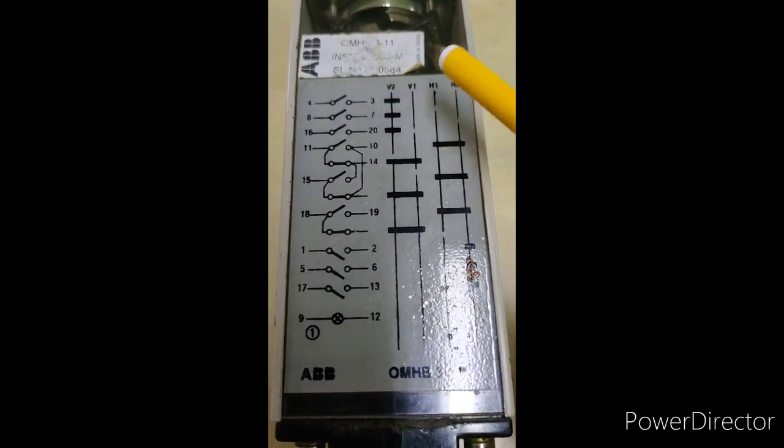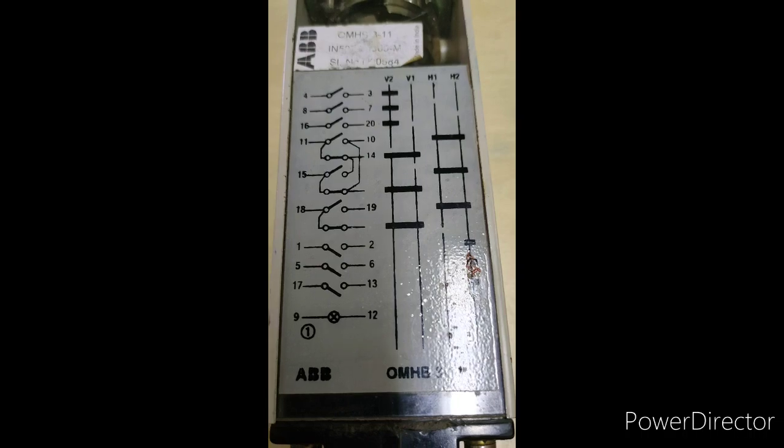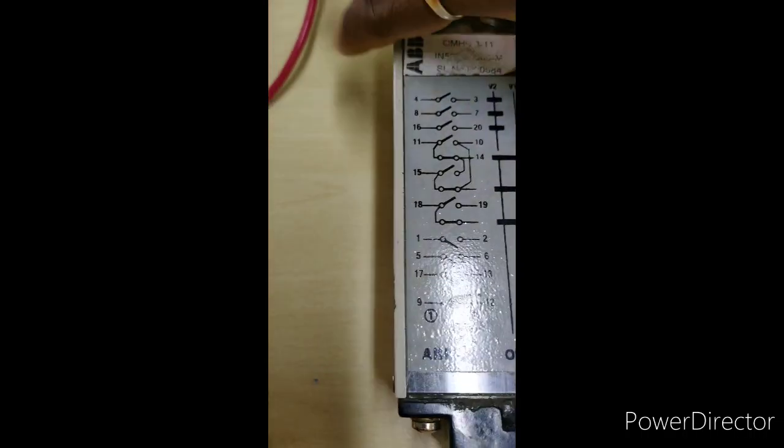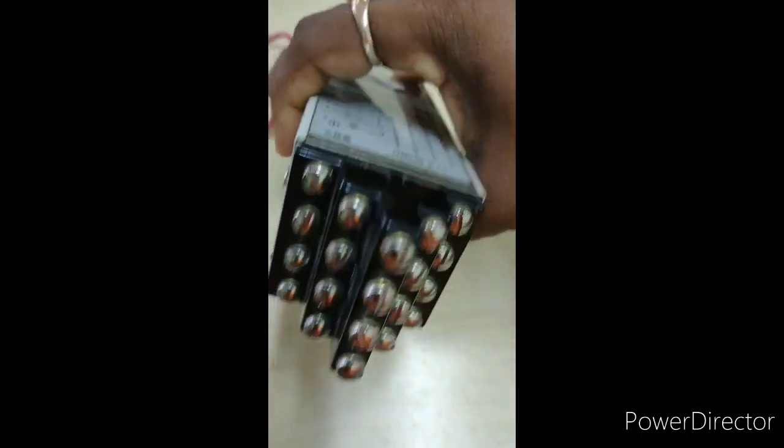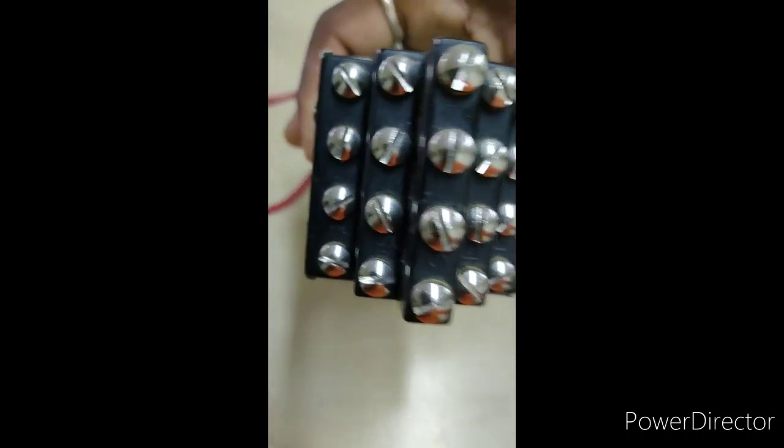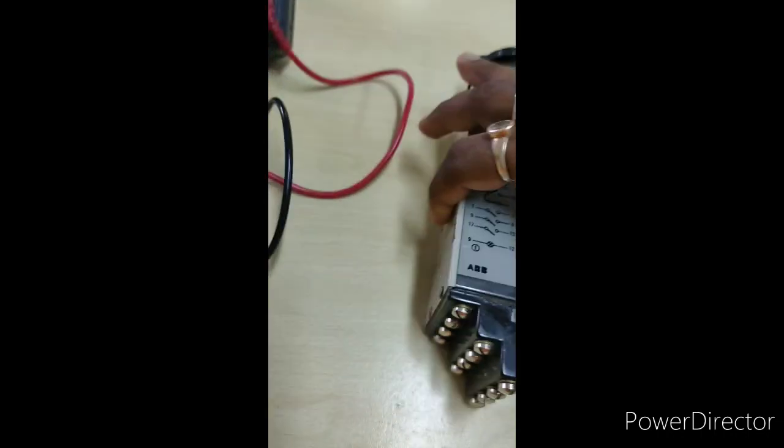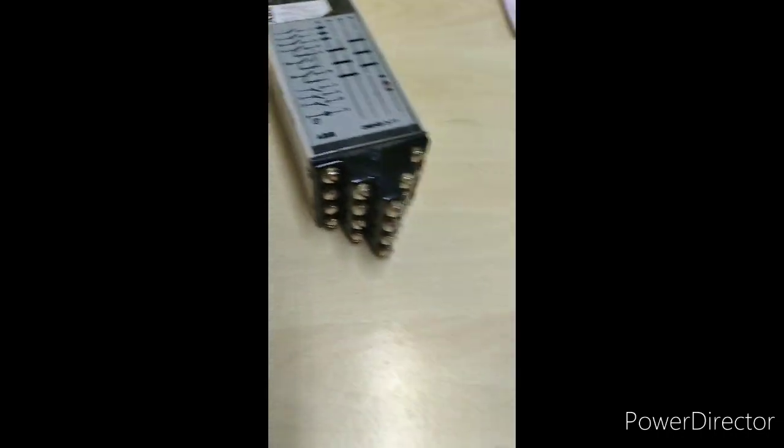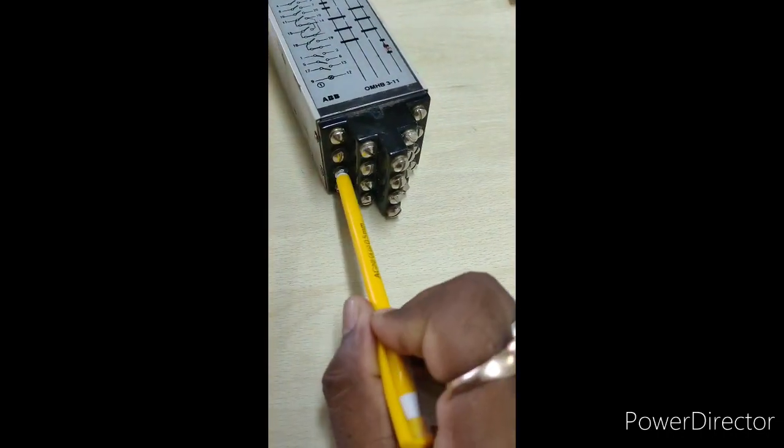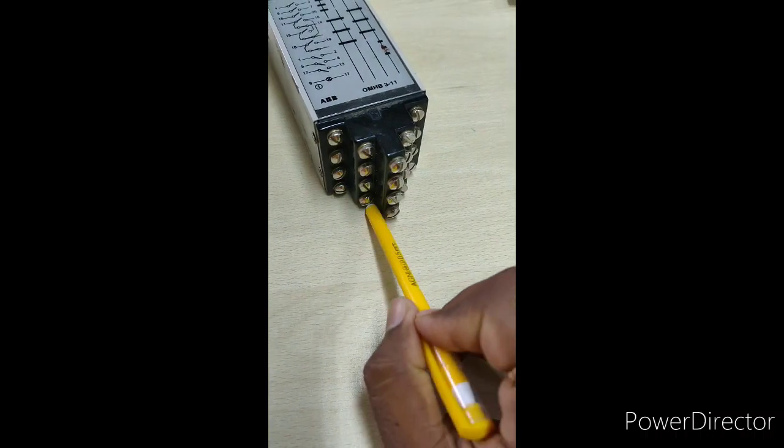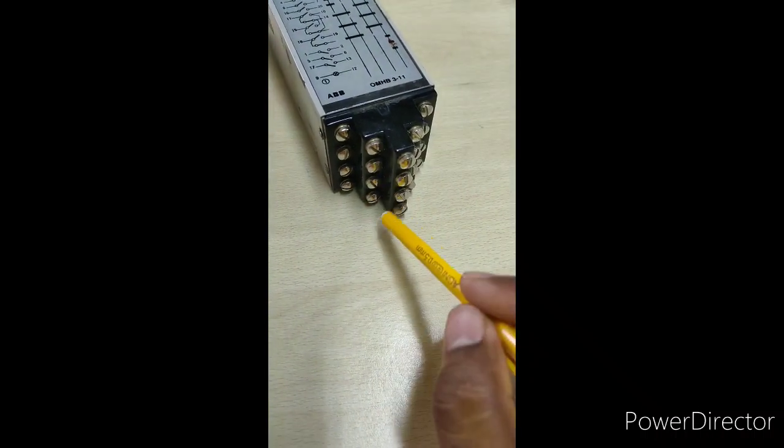I am showing you V2, V1, H1, H2 where H1 and V1 are the trip and close, and H2 and V2 are the NO and NC positions.